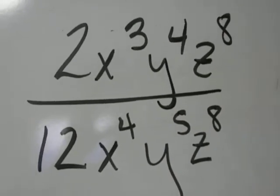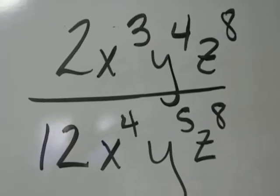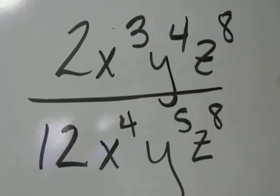So 2x to the 3rd, y to the 4th, z to the 8th over 12x to the 4th, y to the 5th, z to the 8th.